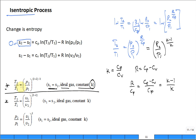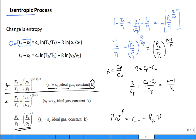Similarly, you can relate changes in temperature to changes in volume for an isentropic process with ideal gas and constant specific heats, as well as pressure-volume relationships. Often, we write this as P times V to the K equals a constant during the process from state 1 to state 2. Since it's a constant, it's the same at the beginning and end of the process, and you get that result.